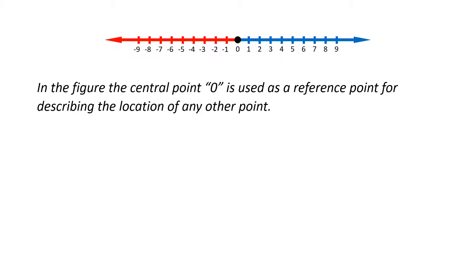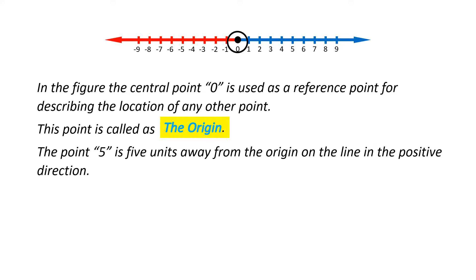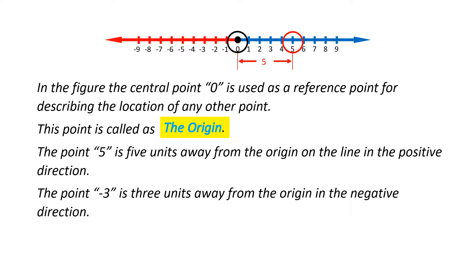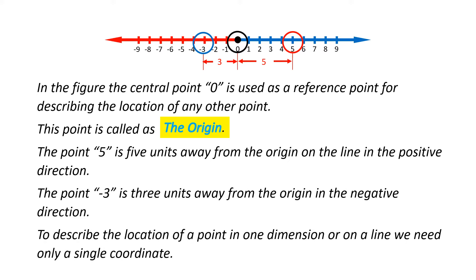In the figure, the central point O is used as a reference point and is called the origin. The point five is five units away from the origin in the positive direction. The point negative three is three units away from the origin in the negative direction. To describe the location of a point in one dimension or on a line, we need only a single coordinate.